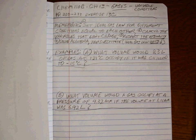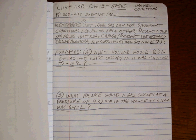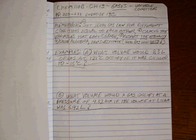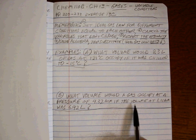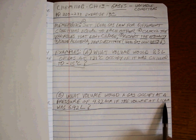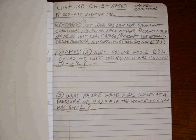Then substitute in, remembering to use the ideal gas law units. Okay, so here's a couple of problems for you to try. What volume would 8.3 liters of gas at 121 degrees Celsius occupy if it was chilled down to negative 15 degrees C? And what volume would a gas occupy at a pressure of 4.32 atmosphere if the volume at 1.1 atmosphere was 6.92 liters?